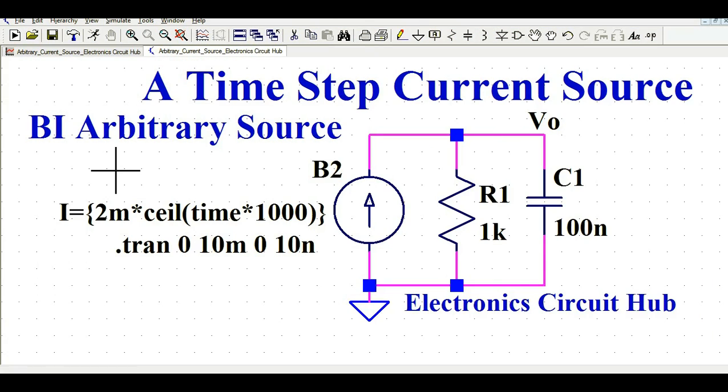So hope guys you have understood how you will generate a time-step current source or arbitrary current source by using the I function of LTSpice. If you have any further question, feel free to ask me in comment section. Thanks for watching this video.